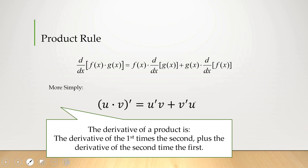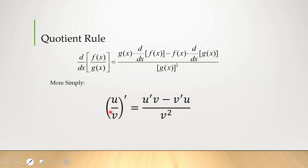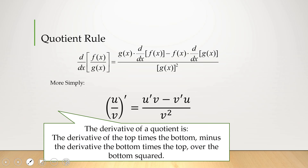We can look at the quotient rule as well — two functions being divided. The typical textbook formula can be written more simply: if you have two functions u and v being divided and you want to find the derivative, so (u/v)', it's u prime v minus v prime u, all over v squared. The derivative of a quotient is the derivative of the top times the bottom minus the derivative of the bottom times the top, all over the bottom squared. It's really important to write this in the correct order — you can't switch these two sets of terms or you'll get the wrong sign, so be very careful with the quotient rule.